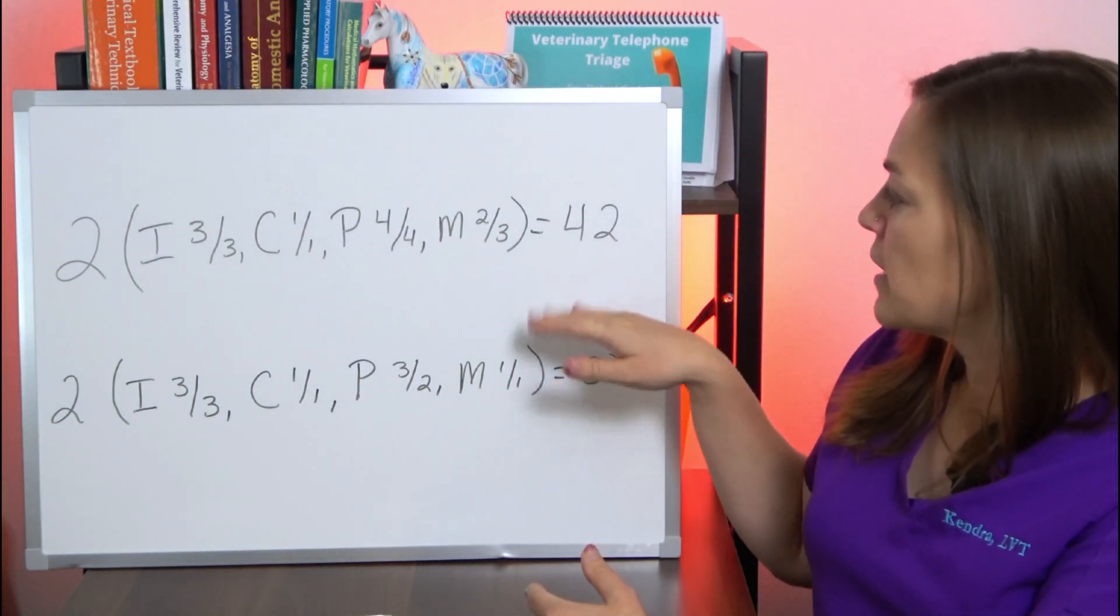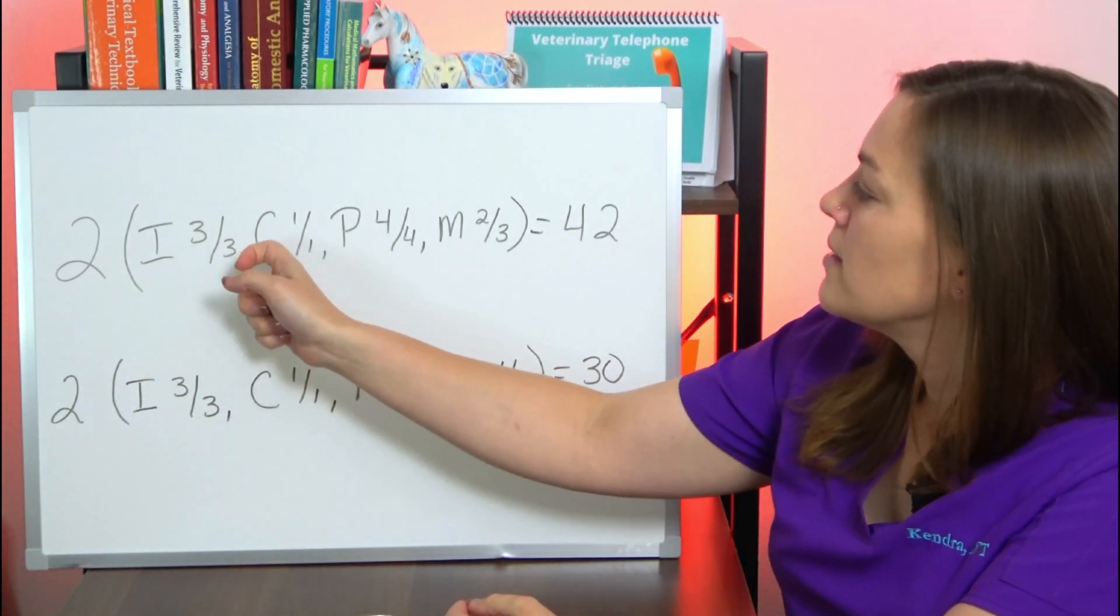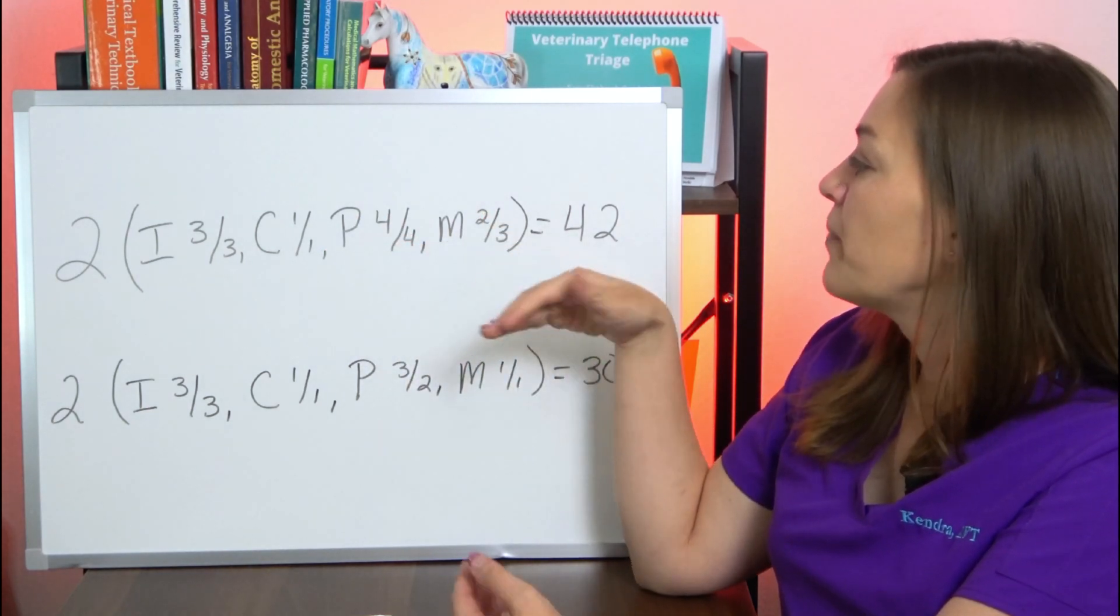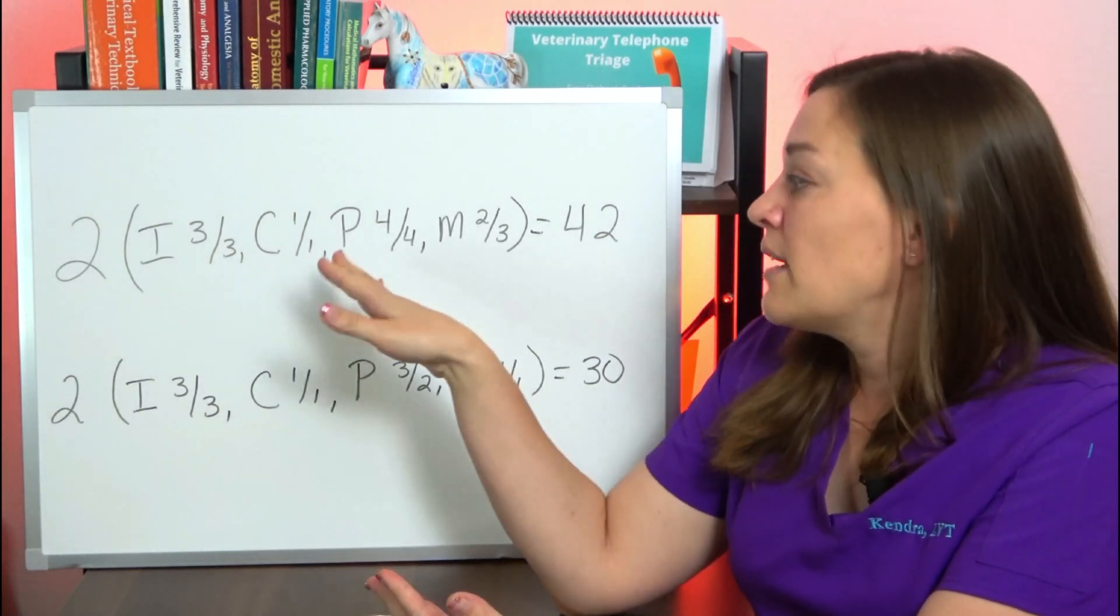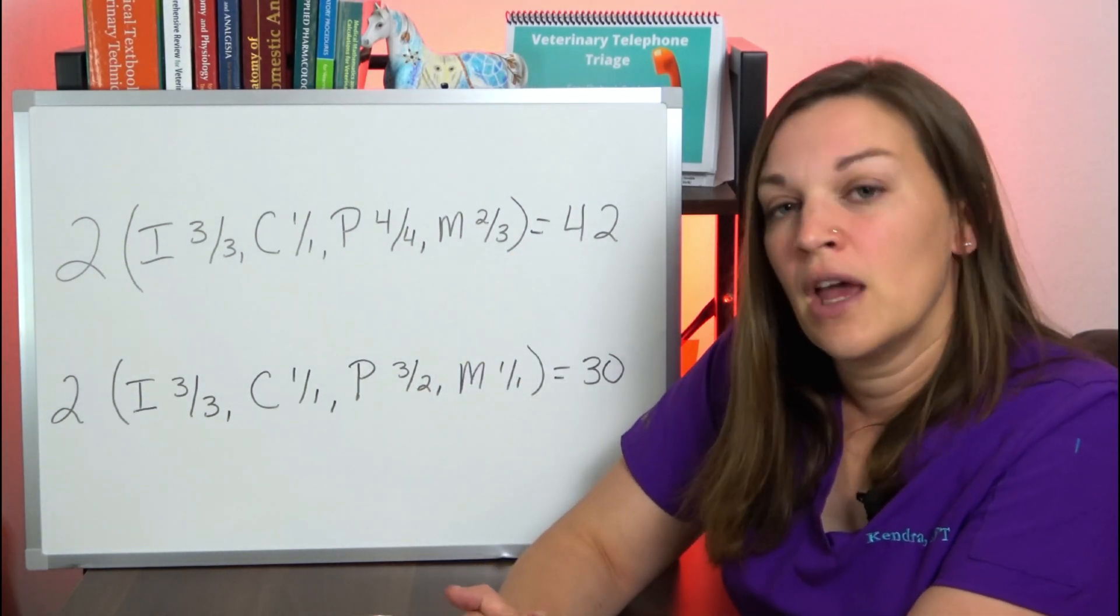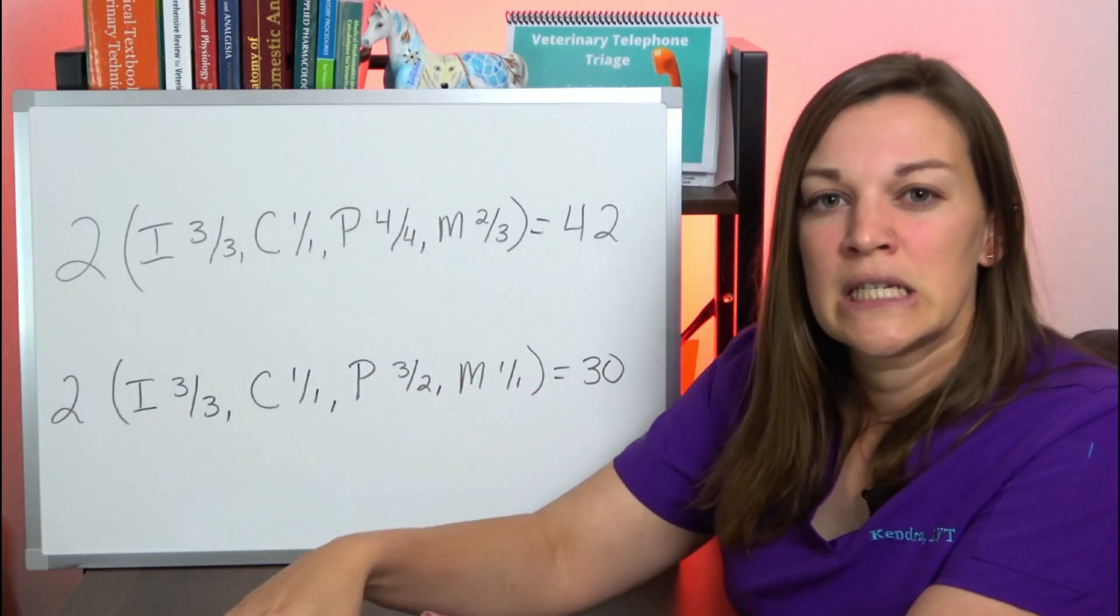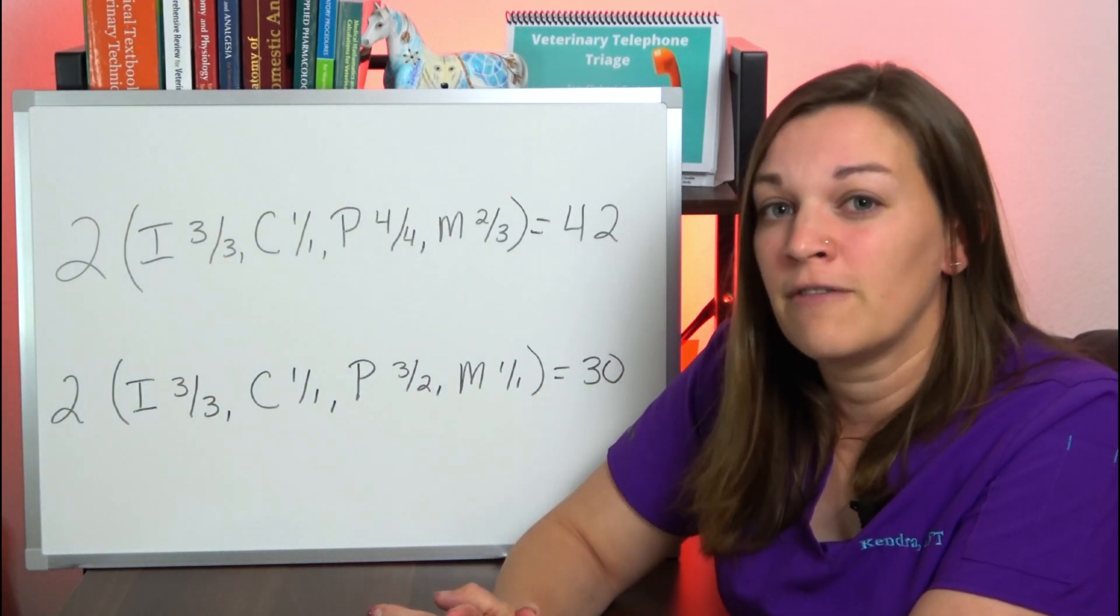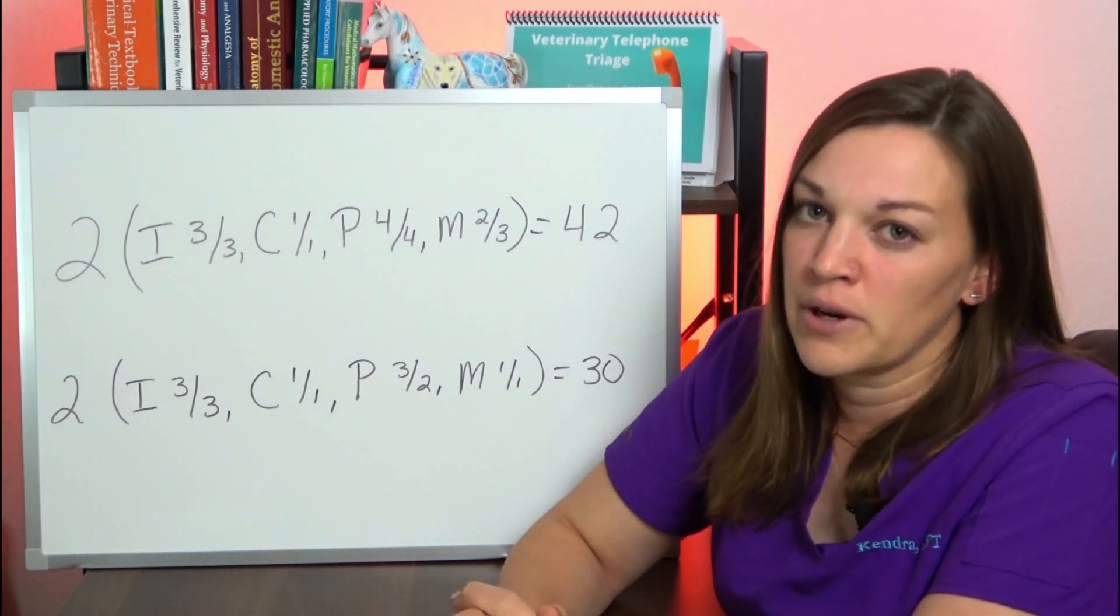So I've got two dental formulas written up here on my board for you guys. The top one, 2(I 3/3, C 1/1, P 4/4, M 2/3). If you watch my demystifying the dental formula video, you'll know that's the dental formula for a normal healthy adult canine, and they have a total of 42 teeth in their mouth. If you do need your dental formula broken down a little bit more to understand what all of this means and how we interpret that, do check out my demystifying the dental formula video. We're going to move through these quickly today as this isn't the main focus of this video.